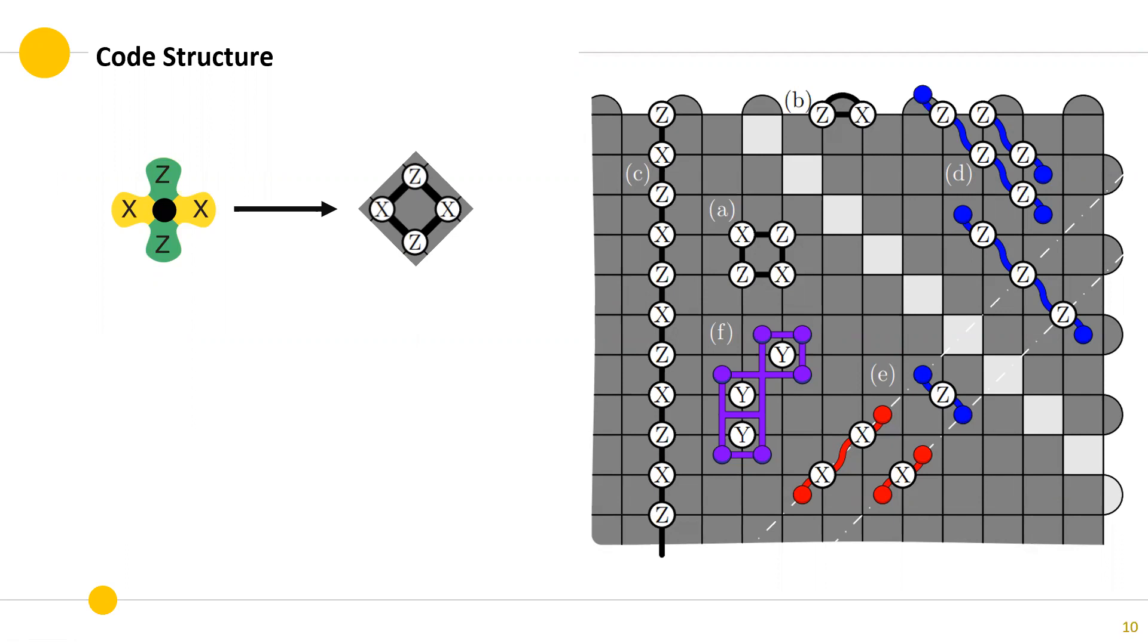C is a logical operator that terminates at the boundary. D is a Z error that gives rise to string-like errors, where every Z error is detected by two faces. E shows the X errors that give rise to string-like errors in the orthogonal orientation to Z. F shows how the surface code reacts to Y errors, where the four surrounding faces detect the error.